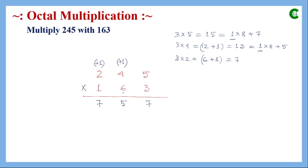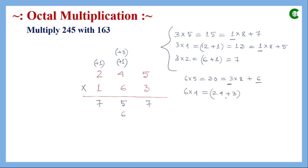For the second partial product with digit 6: 6 × 5 = 30, represented as 3 × 8 + 6, so sum is 6 and carry is 3. Then 6 × 4 = 24, plus carry 3 equals 27, represented as 3 × 8 + 3, so sum is 3 and carry is 3, which is forwarded to the next position.